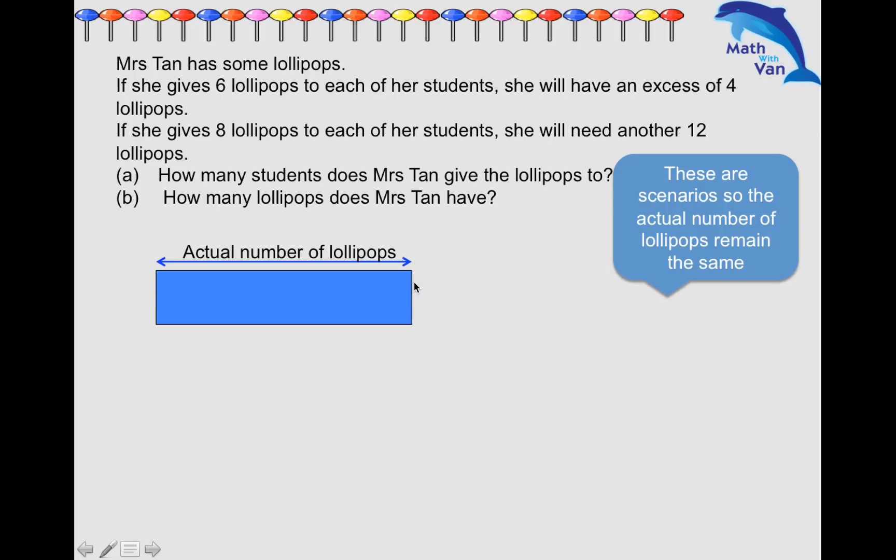Taking a look at scenario one: if she gives six lollipops, she will have an excess of four, so she did not use up all her lollipops. The model drawn should be shorter than the blue, and then we have another four left. In this case, each student has six lollipops.